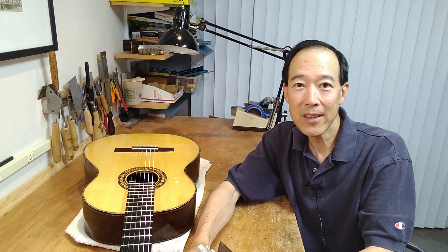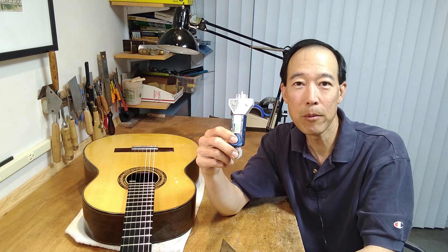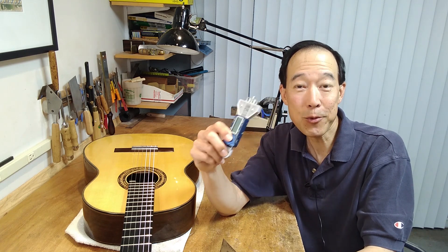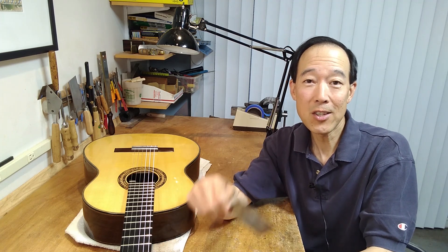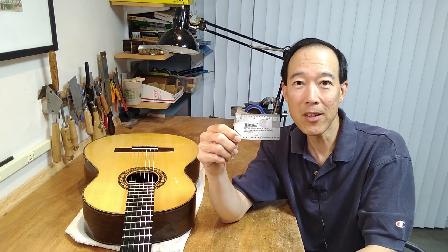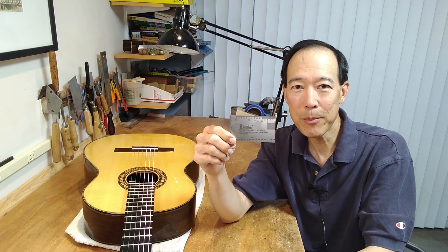Let me start by saying there are several commercially available action gauges you can buy, such as this digital one from Luthier's Mercantile. It's really great but it's $50. There are less expensive ones, such as this one from Stuart McDonald, but I find it really hard to read and not a very good option.